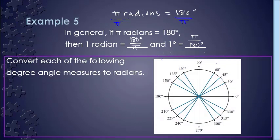So here's the example: convert each of the following degree angles into radians. We're starting with zero degrees, and zero degrees represents moving nowhere. So zero degrees, whether in degrees or radians, is just going to be zero.